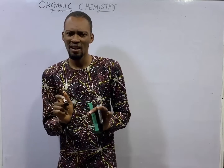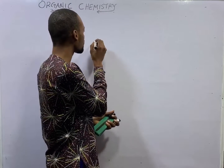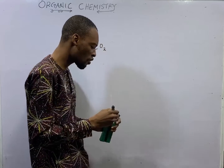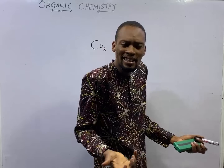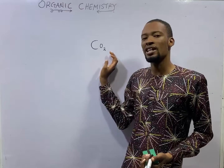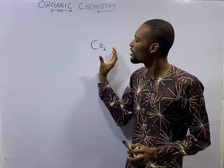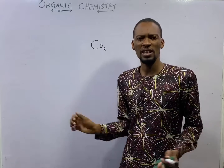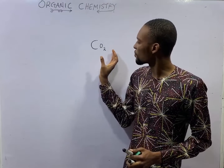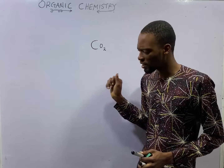Remember, we have covered non-metals and their compounds. One of the compounds of non-metals we treated was CO2, carbon dioxide gas. We said one of the tests for carbon dioxide is that it turns lime water milky. We also said that carbon dioxide is a constituent of air — air is a mixture and one of its components is carbon dioxide. And to remove carbon dioxide from air, we use sodium hydroxide.